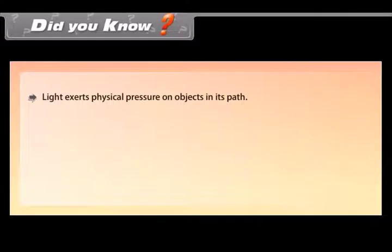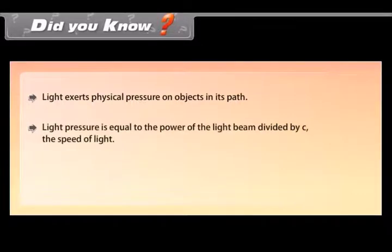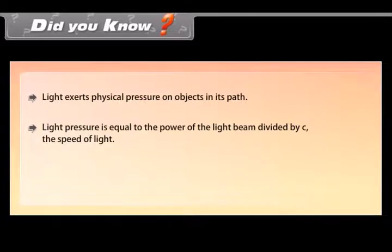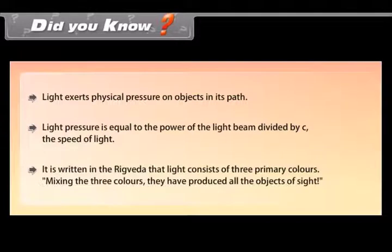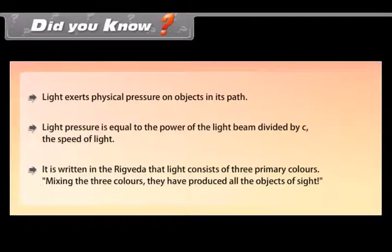Did you know: Light exerts physical pressure on objects in its path. Light pressure equals the power of the light beam divided by C, the speed of light. It is written in the Rig Veda that light consists of three primary colors, and mixing these three colors produces all the objects of sight.